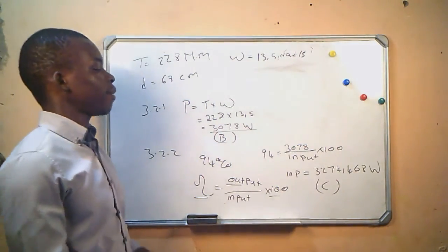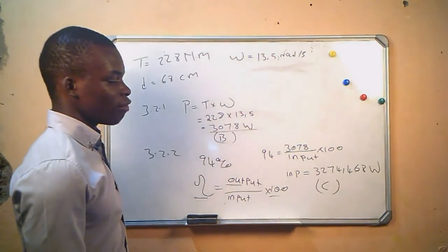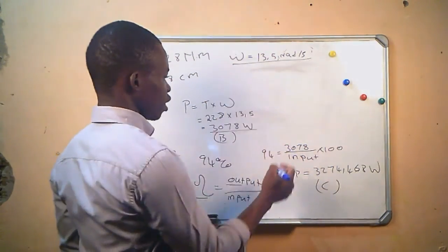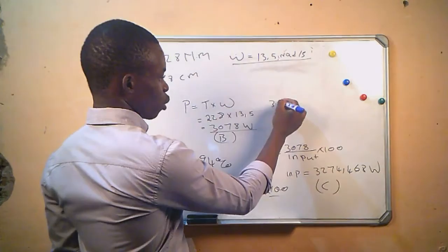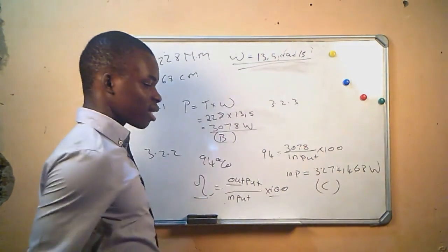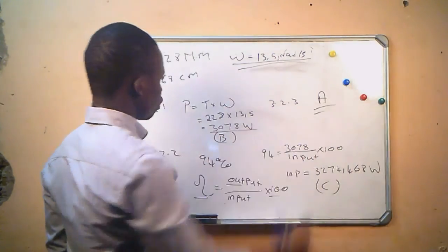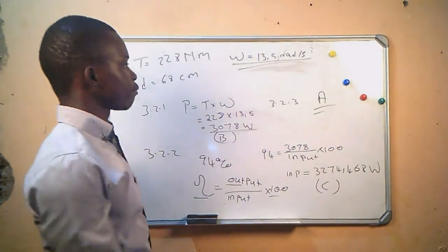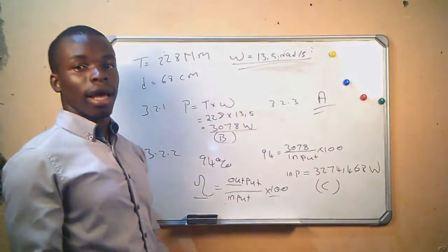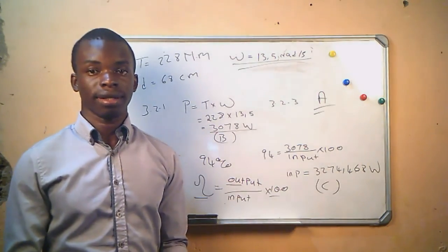Question 3.2.3 asks for the angular velocity of the machine. The angular velocity is already given to us as 13.5 rad/s, labeled 3.2.3, and corresponds to answer A. That's how you go about answering these questions, and that's the end of our lesson. I will see you in the next lesson.